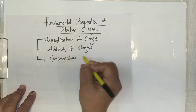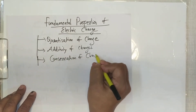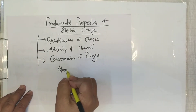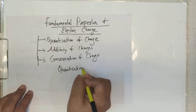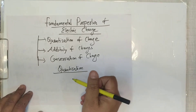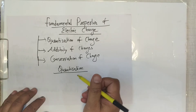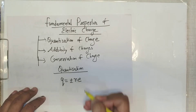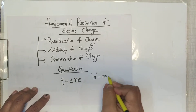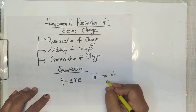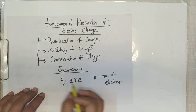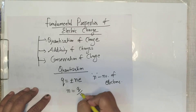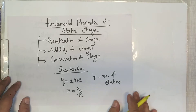What is quantization? The word 'quanta' means the smallest packets or bundles. Any charge q can be written in the form q = ±ne, where n is the number of electrons. You can find n as q divided by e. This is quantization of charge.